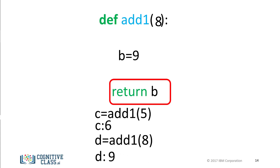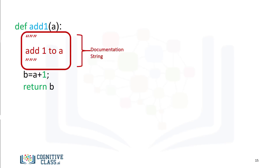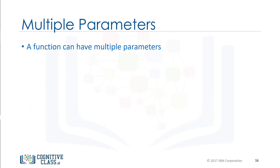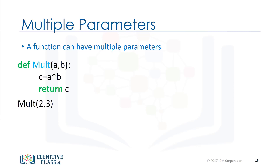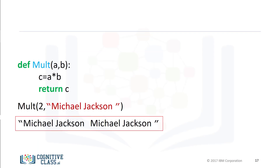Let's try and make this function more complex. It's customary to document the function on the first few lines to tell anyone who uses the function what it does. This documentation is surrounded in triple quotes. You can use the help command on the function to display the documentation, which will print out the function name and the documentation. A function can have multiple parameters. The function mult multiplies two numbers — in other words, finds their product. If we pass the integers 2 and 3, the result is a new integer. If we pass the integer 10 and the float 3.14, the result is the float 31.4.